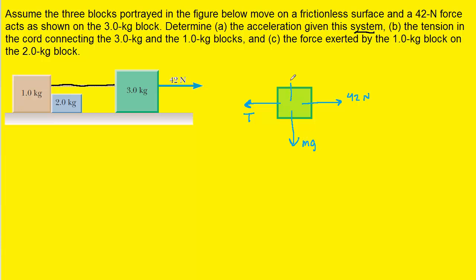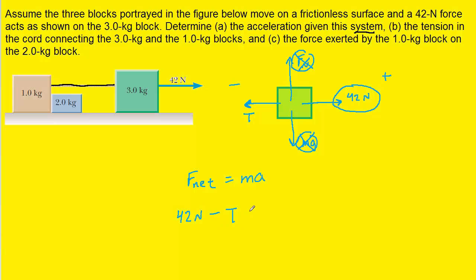We also have the downward gravitational force mg and the upward normal force, which are equal in magnitude and cancel each other out. Applying Newton's second law — net force equals mass times acceleration — we have positive 42 Newtons (pointing right) minus the tension force T (pointing left) equals the mass of this block, three kilograms, times the acceleration. Each individual block accelerates at the same rate as the system, so we fill in seven meters per second squared.